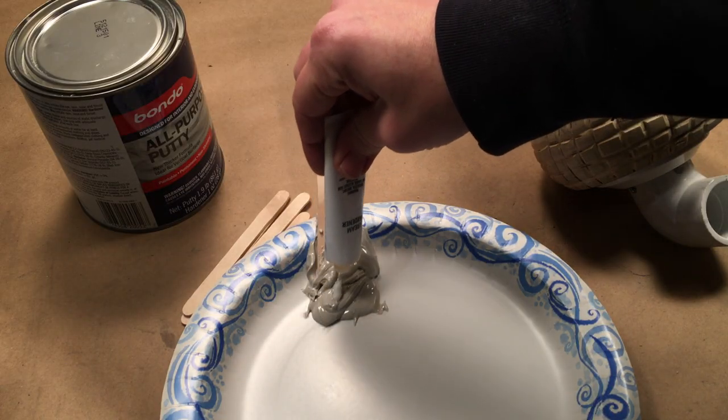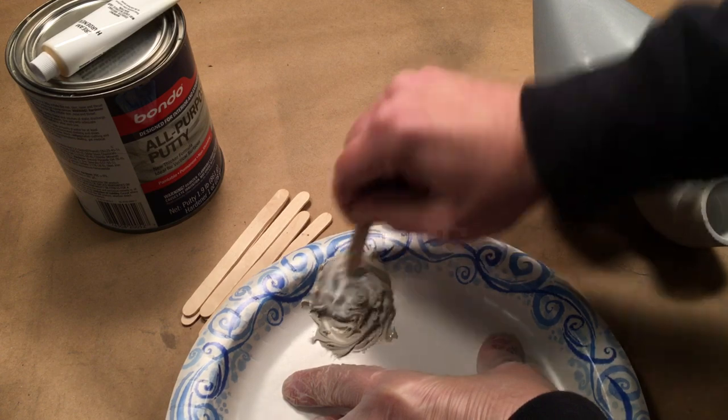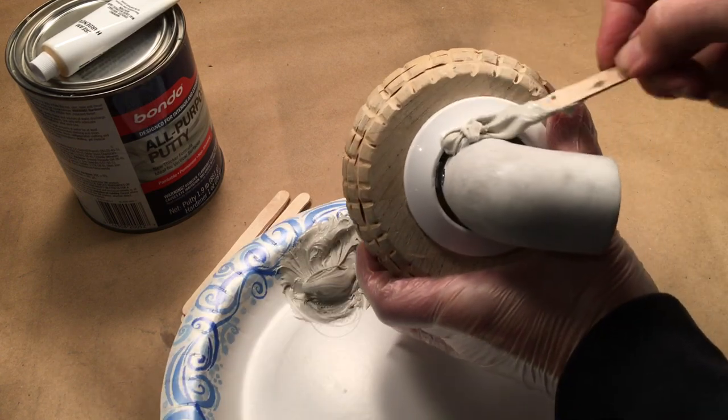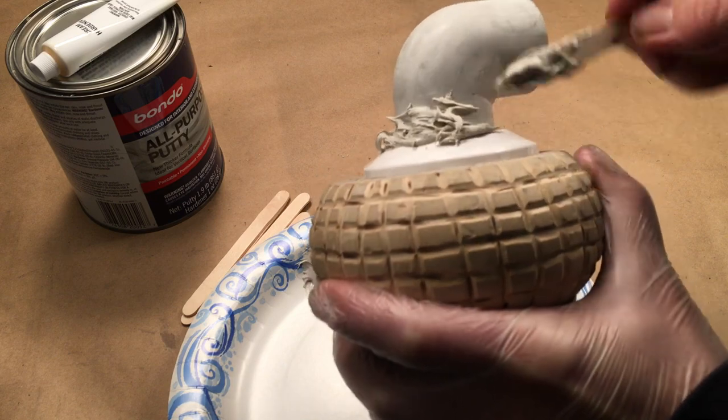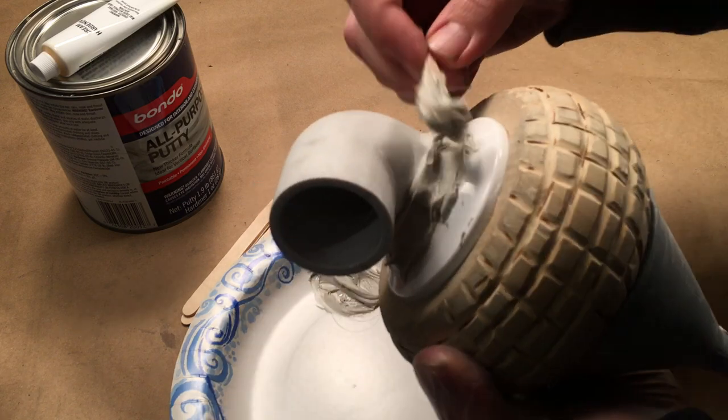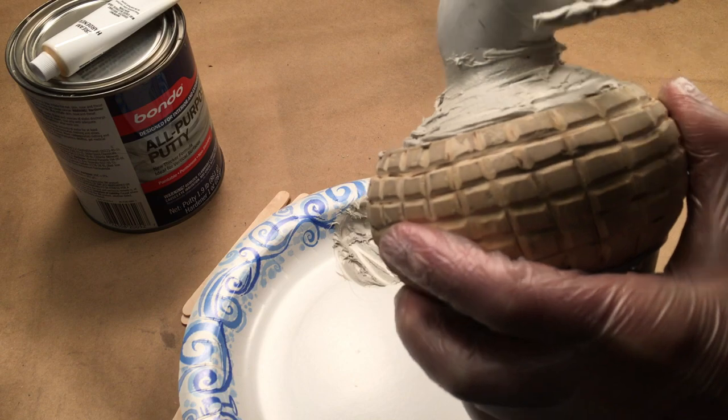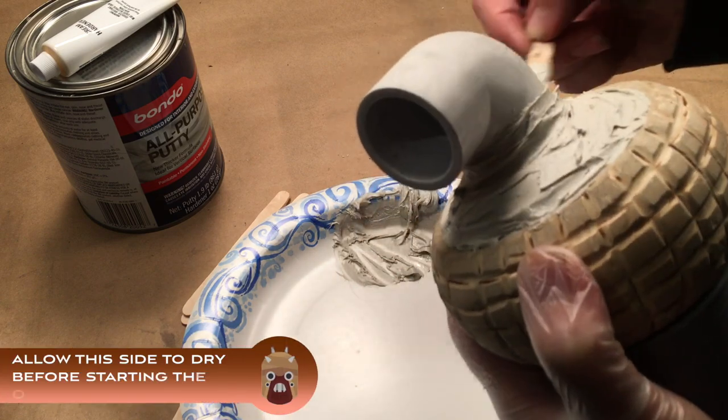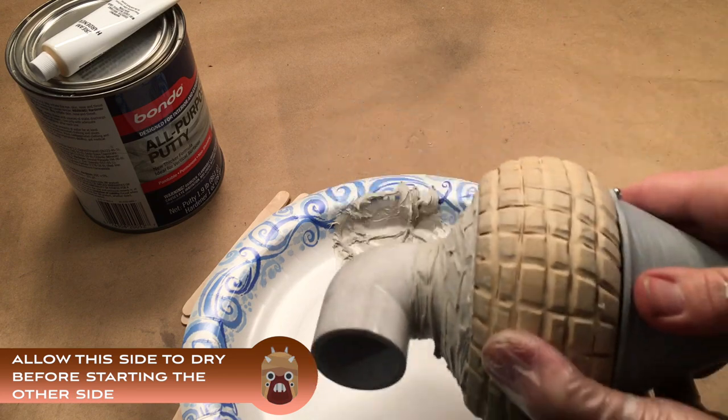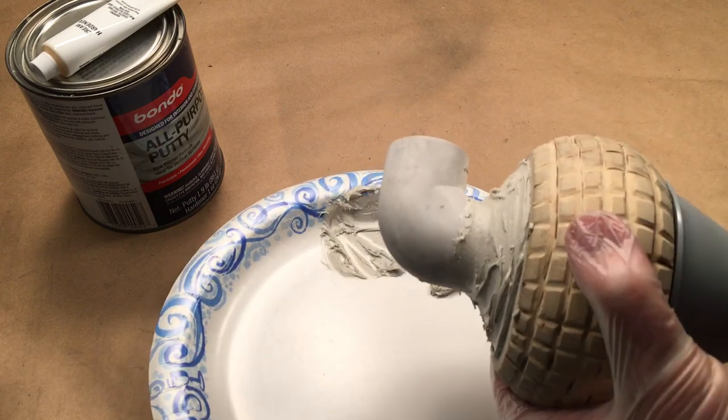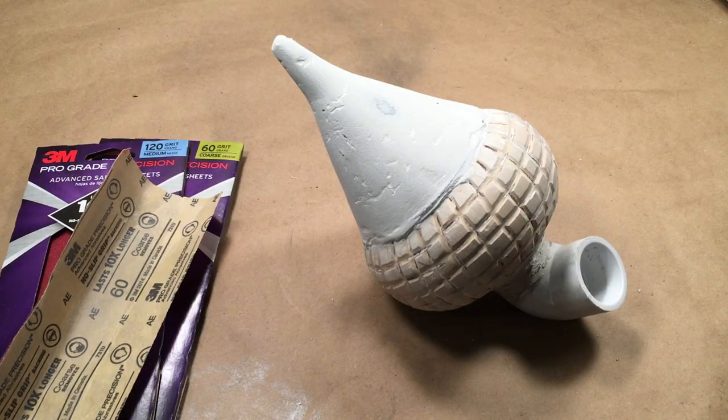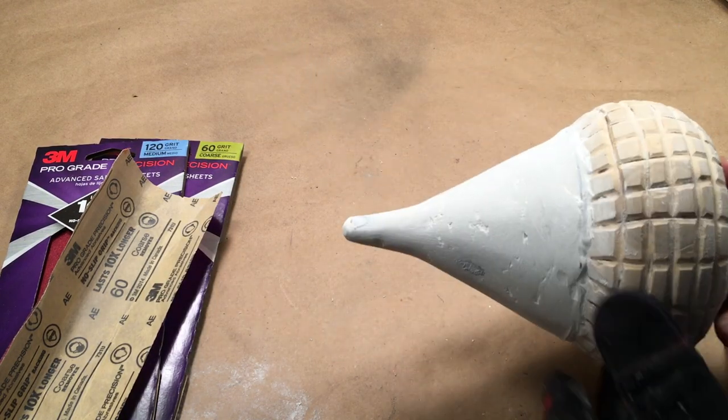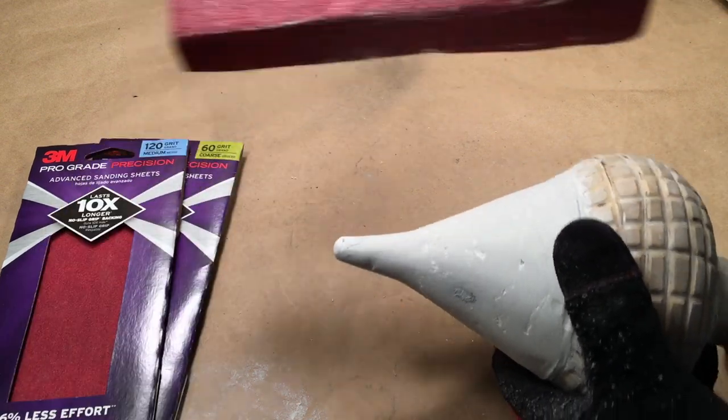To fill in all of the holes and seams, mix up a batch of Bondo putty and apply it to the assembly as shown. If you have any really rough patches of putty, sand them down with 60 or 80 grit sandpaper.